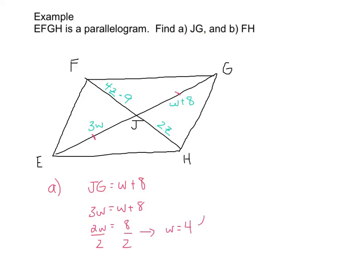Now we're not quite done because we want to find JG. Well, we know what W is. So we can just substitute in here. JG is equal to four plus eight. Or in other words, it is simply 12. And now we are done with part A.